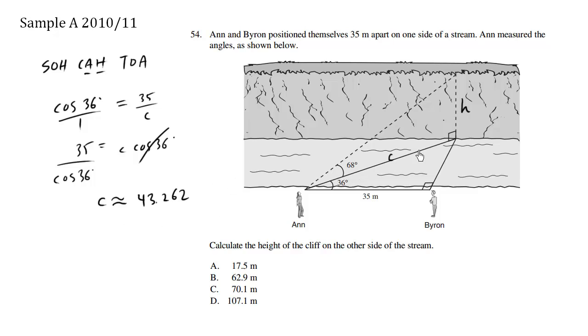Now that we solved for C, we can solve for H. We're interested in the adjacent and the opposite. So we're going to use the tan ratio now for 68 degrees.